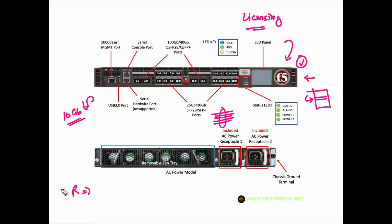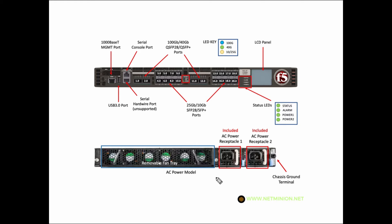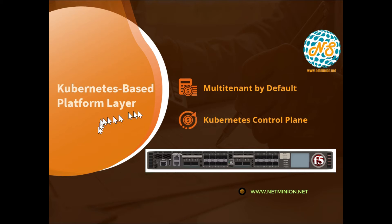The R series starts from the 2000 series, with flavors R2600 and R2800. Then the 4000 series offers R4600 and R4800. The 5000 series includes R5600, R5800, and R5920. Then there is the 10000 and 12000 series. Regarding Velos, I'll talk about that later. The fan tray and AC model are similar to previous appliances, with speed going up to 100 gigabits.